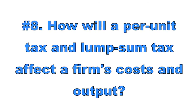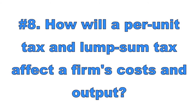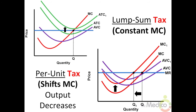Number eight: how will a per unit tax and lump sum tax affect a firm's costs and output? A per unit tax discourages production by raising marginal costs — it shifts the MC curve upward. This decreases the firm's level of output and reduces economic profits. The average total cost and average variable cost curves also shift up, but it's the marginal cost curve that changes the profit-maximizing level of output, because the MR equals MC point moves to the left. A lump sum tax does not change a firm's level of output because it does not change marginal cost — it increases fixed costs and shifts average total cost upward, decreasing economic profit but not changing output.